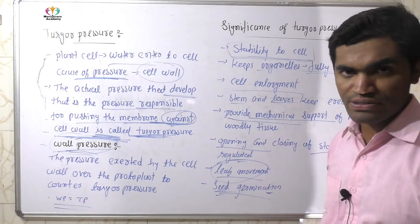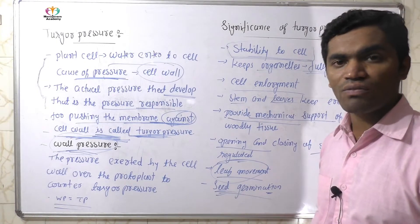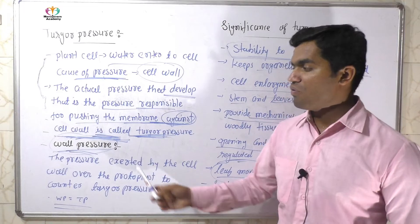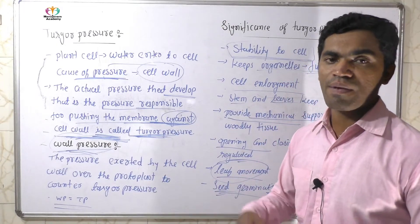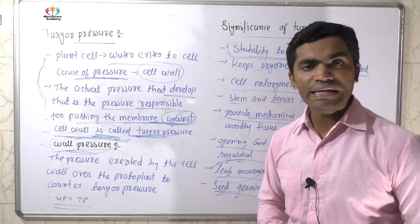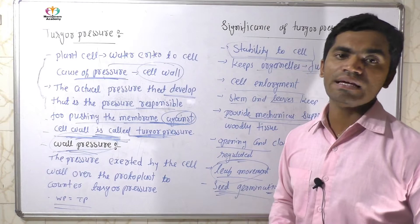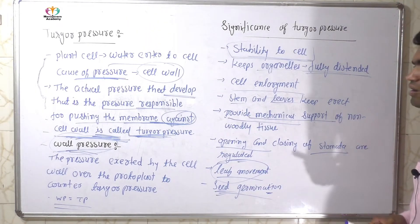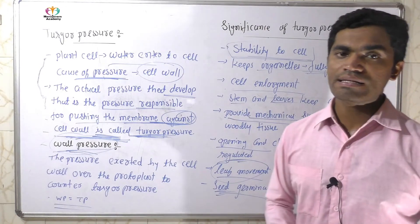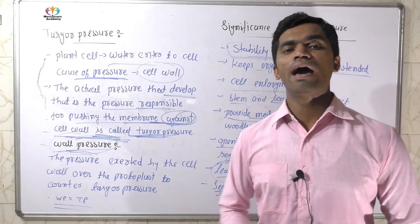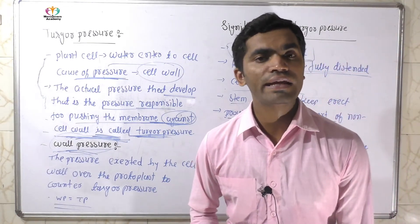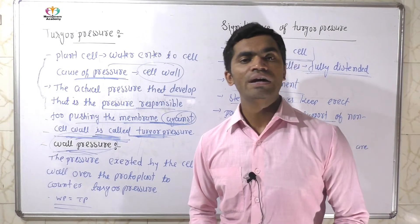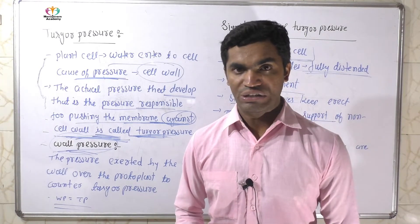Those are all the significances of turgor pressure. Turgor pressure and wall pressure are both very important for plant growth, stability of organs, and providing mechanical support. These are all factors very important to the plant, and they are all due to turgor pressure.